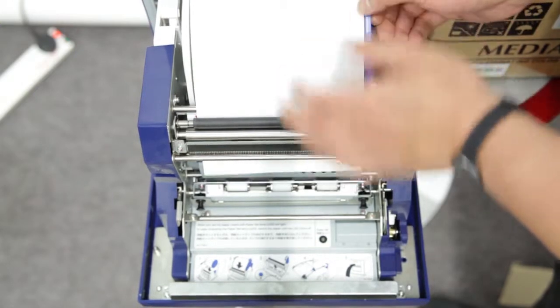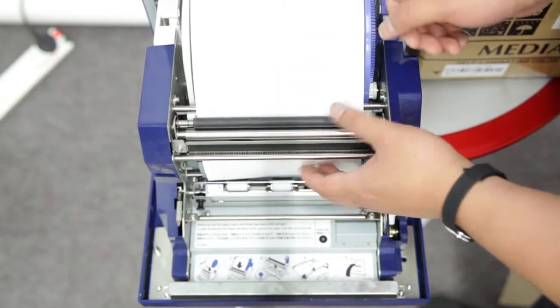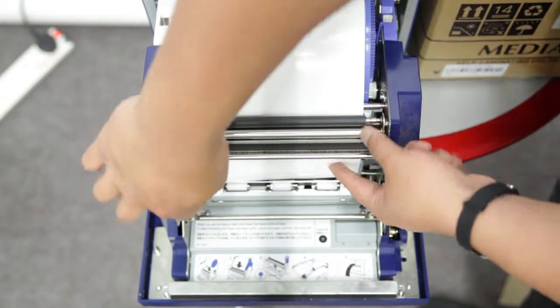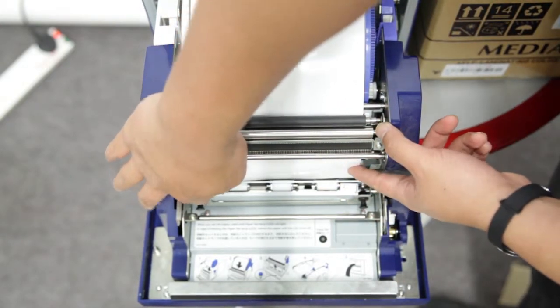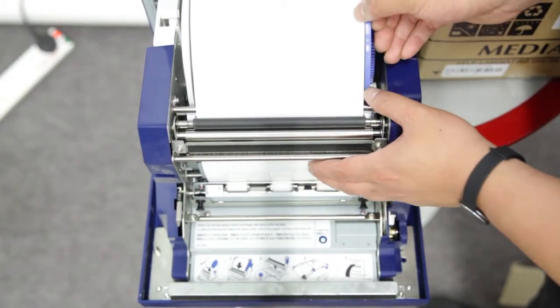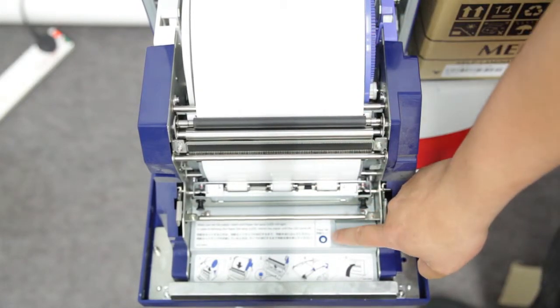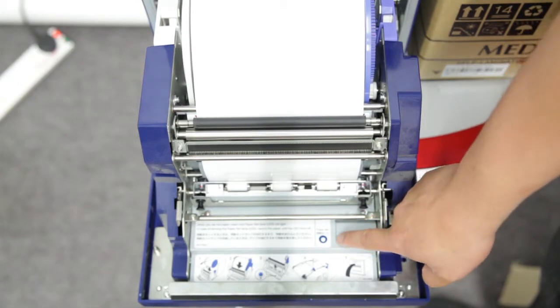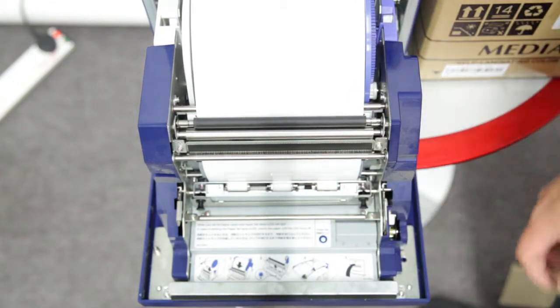The second step is to feed the printer paper through the second hole, indicated by the black arrows and black lines. Once the printer paper has been fully inserted, a blue icon should appear. Please see the diagram on the printer for further information.